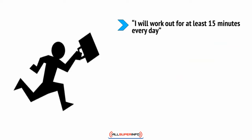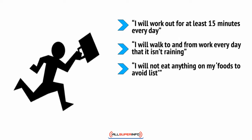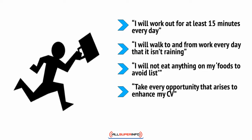Maybe you've decided you're not so interested in toning muscle but want to start by focusing on losing weight so you look better in a suit and feel more energetic. In that case, your goal might be: 'I will walk to and from work every day that it isn't raining.' There's nothing wrong with having more than one goal or making more detailed goals. You might couple this with a secondary goal: 'I will not eat anything on my foods-to-avoid list.' Focus on these small steps and get yourself closer to your goal one bit at a time.